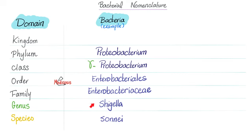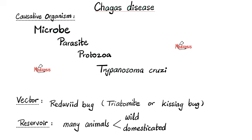For example, look at Shigella sonnei. The phylum is Proteobacteria, the class is Gammaproteobacteria, the order is Enterobacteriales — 'entero' means intestine — the family is Enterobacteriaceae, the genus is Shigella, and the species is sonnei.